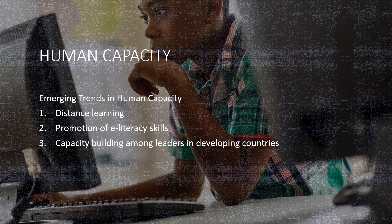The fourth dimension of ICT is human capacity. It is important to acquire all the necessary skills and knowledge related to ICT in order to understand, participate actively in, and benefit fully from ICT and the knowledge economy. Improving human capacity means ICT in education and training at all levels of society, including distance learning. It also involves the promotion of e-literacy skills, particularly for women and girls, young people, and other disadvantaged groups, as well as capacity building among leaders and operational staff in developing countries, local communities, rural and underserved areas, and information professionals.